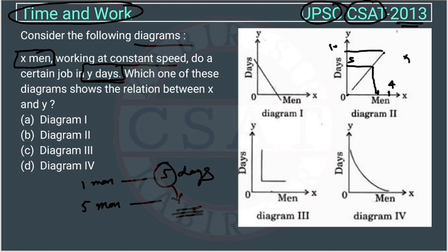In another diagram, one man works, then two, then three — but the number of days remains constant. That can't happen, so this diagram is also wrong. And in another figure, the values go negative on the X-axis and Y-axis, which can't be right — the number of men and the number of days can't be negative.